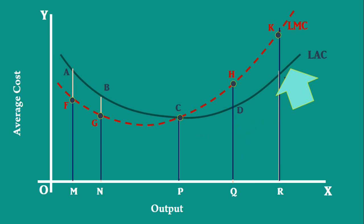When Long Run Average Cost Curve rises, Long Run Marginal Cost is greater than Long Run Average Cost. At the minimum point of Long Run Average Cost Curve, Long Run Average Cost is equal to Long Run Marginal Cost. At that point, Long Run Marginal Cost Curve cuts Long Run Average Cost Curve from below.